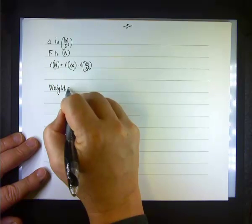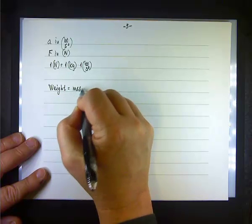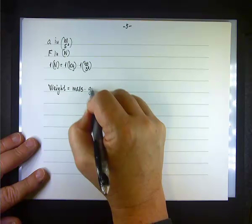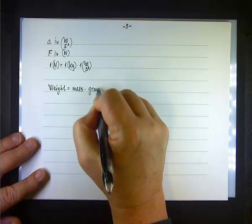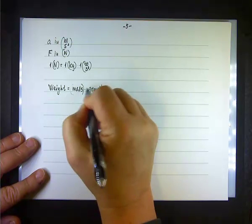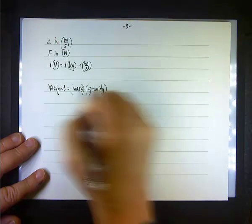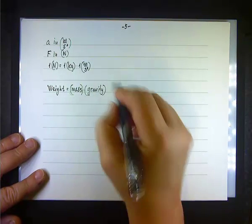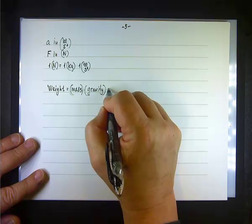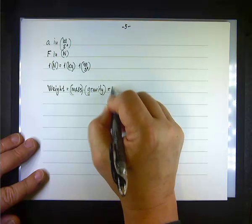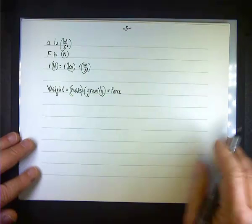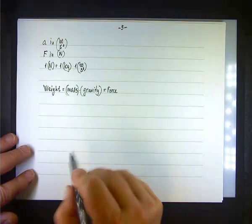Weight equals mass times gravity, because gravity is the force that applies. So weight is a force, and since gravity is an acceleration, the weight is a force.